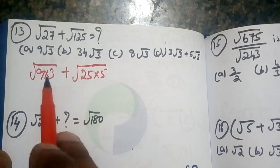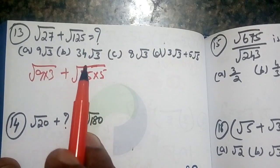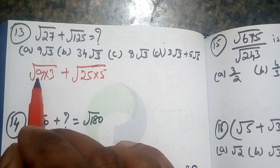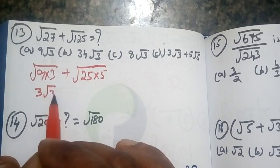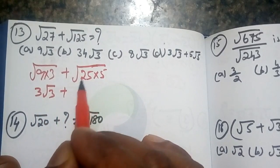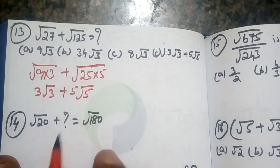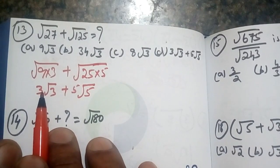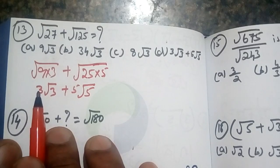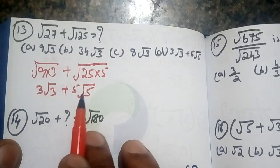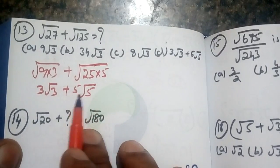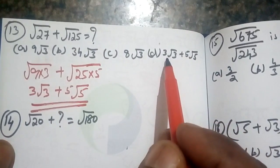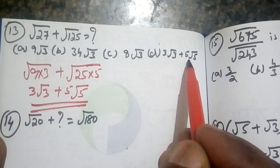We will call root 9 into root 3 plus root 25 into root 5. So, root 9 into root 3 is 3 root 3. And root 25 into root 5 is 5 root 5.